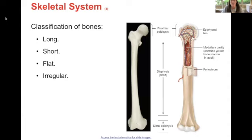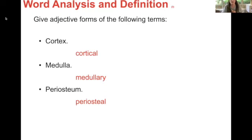Skeletal system: classification of bones. We have long, short, flat, and irregular. Then you have the breakdown of the different bones. This is something for you to just kind of review. We just have a lot to cover.